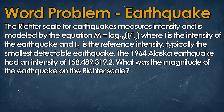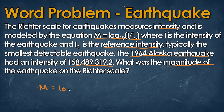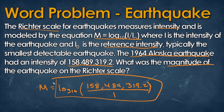Now let's look at a word problem. The Richter scale for earthquakes measures intensity and is modeled by the equation: magnitude equals log base 10 of i (the intensity) divided by the reference intensity, which is 1. The 1964 Alaskan earthquake had an intensity of 158,489,319.2. Plugging in, the magnitude equals log base 10 of 158,489,319.2 over 1. Using a calculator, the magnitude m equals 9.2.